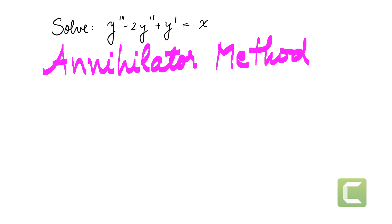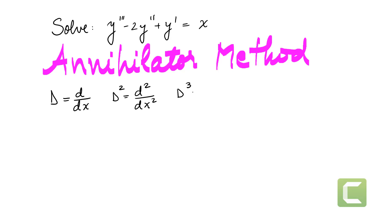The annihilator method involves using the operator D, where D is defined to mean d/dx, D squared is d squared/dx squared, and D cubed is d cubed/dx cubed. Let's integrate that into our problem.